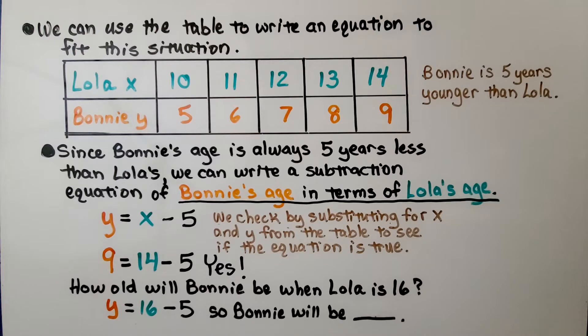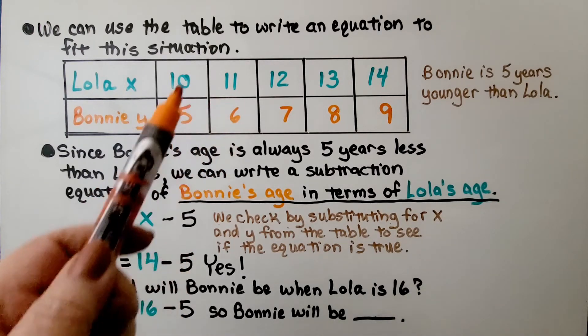We can use this table to write an equation to fit this situation. Bonnie is 5 years younger than Lola. Since Bonnie's age is always 5 years less than Lola's, we can write a subtraction equation of Bonnie's age in terms of Lola's age. We would have y equals x minus 5. Bonnie's age equals Lola's minus 5. We can check by substituting for x and y from the table to see if the equation is true.